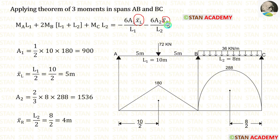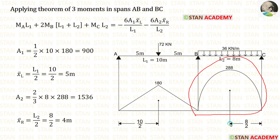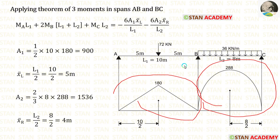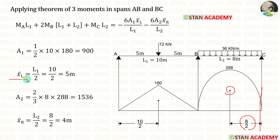Now let us calculate the centroids. When we calculate the centroids, we must be very careful. For the first diagram, the centroid distance should be calculated on the left side. For the second diagram, the centroid distance should be calculated on the right side. That is why in the formula it is mentioned x-bar left and x-bar right. Here we are having symmetrical diagrams, so the centroids lie at the center for both. The distance from the centroid to the left is 10/2 = 5 meters, so x-bar left is 5 meters. For the parabola, the centroid distance to the right side is 8/2 = 4 meters, so x-bar right is 4 meters.